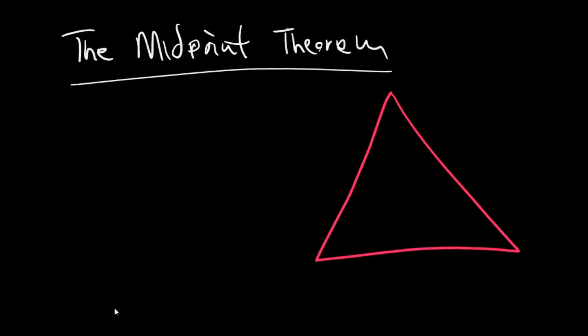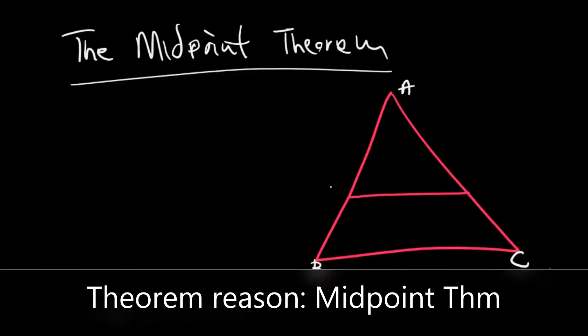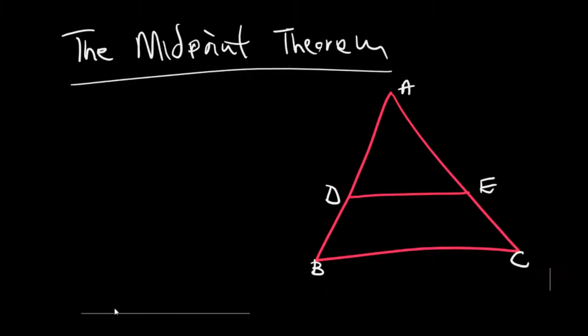that looks like this. We're given that this is point A, this is point B, this is point C, and there's a line here which forms point D and E. We are given that this side is across to this side and this side equals this side. So that's what you're given.